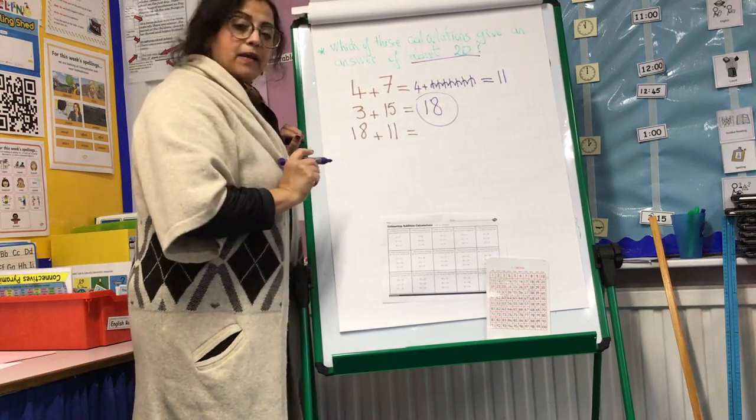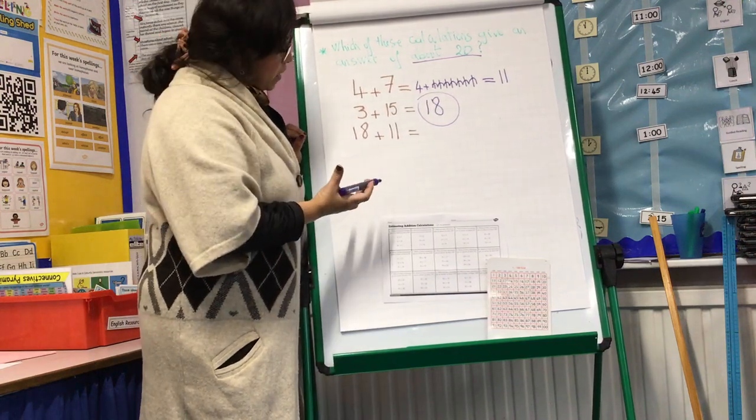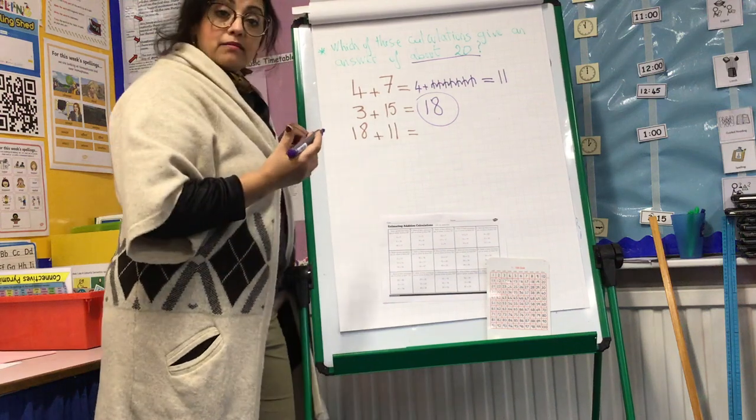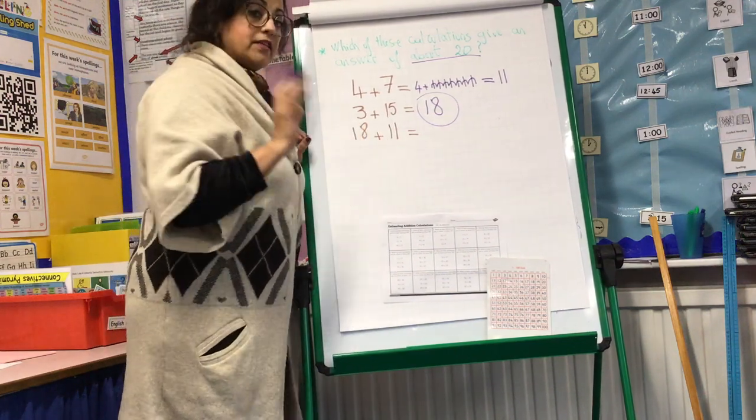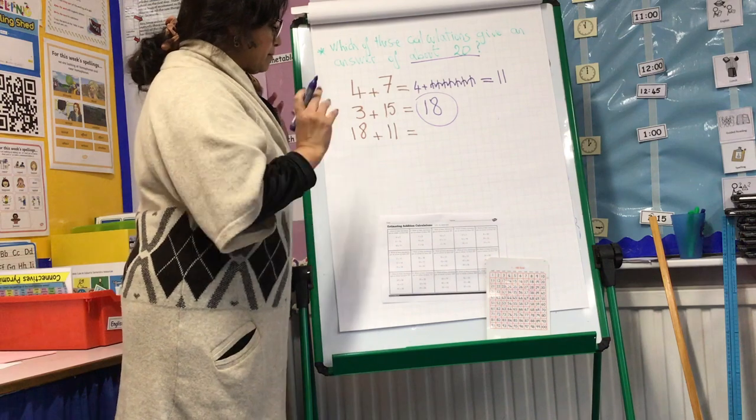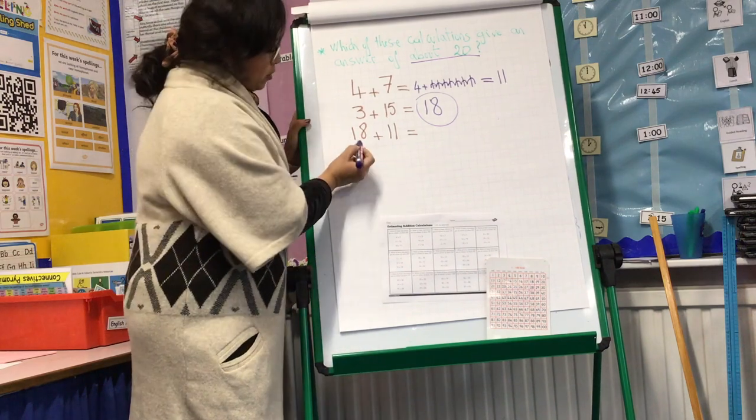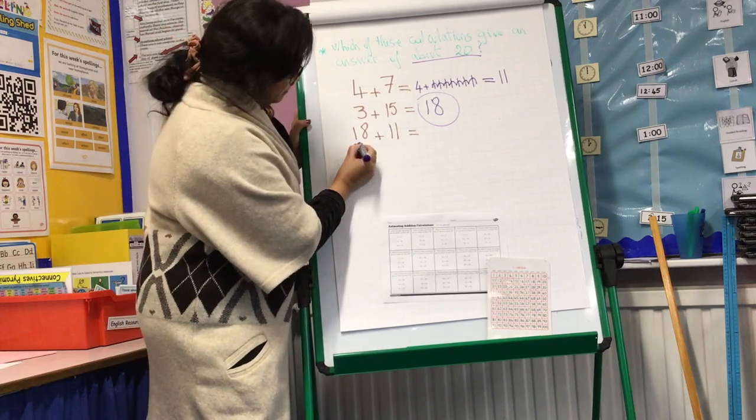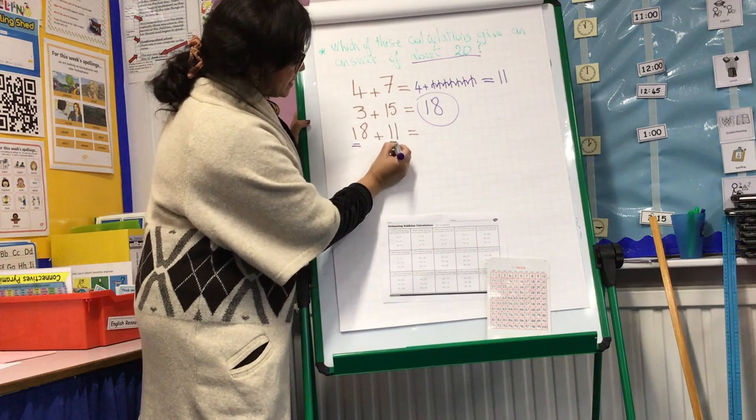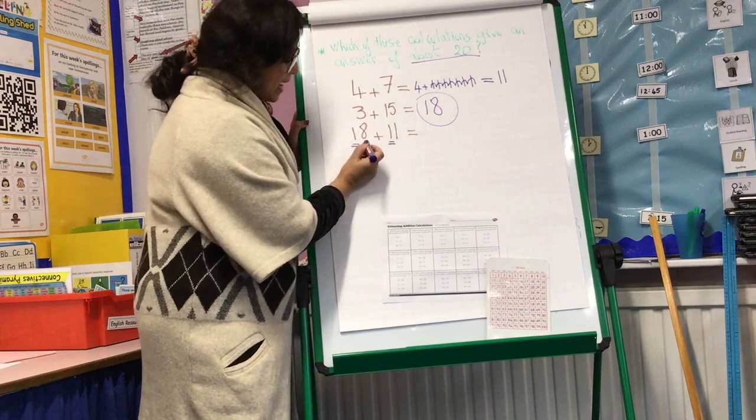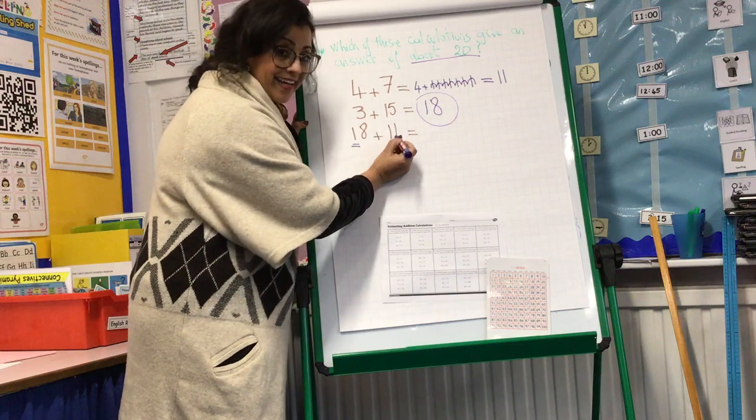What about 18 plus 11? Can we just try? Some of you can say just 18 plus 11, you may know how to use it immediately. If not, we have here 10 and we have here 10, and we have the ones are 8 here and 1 here.